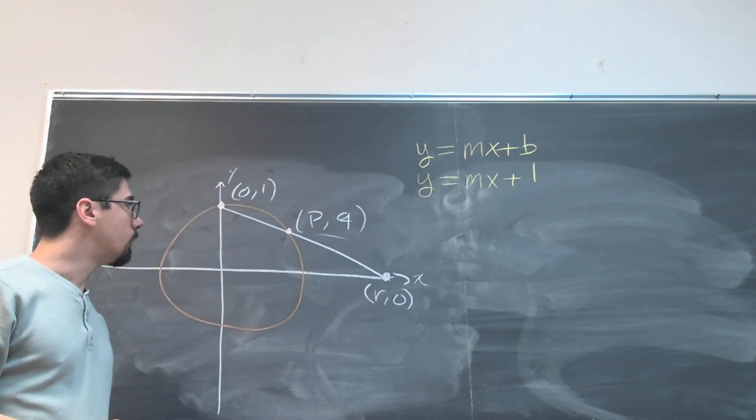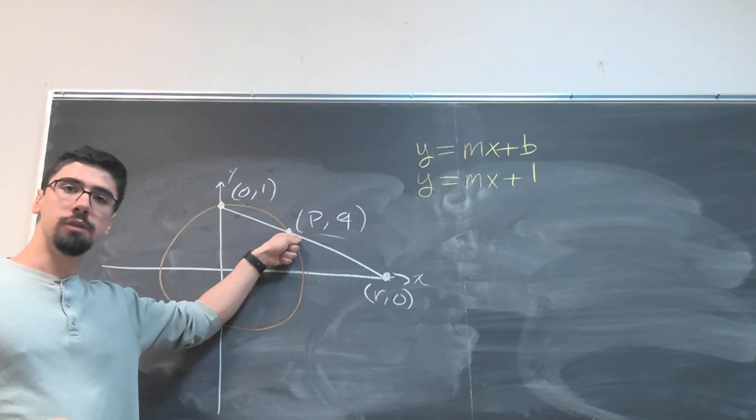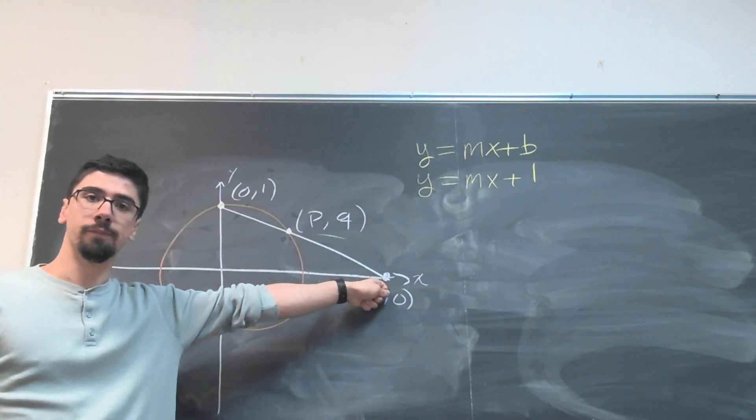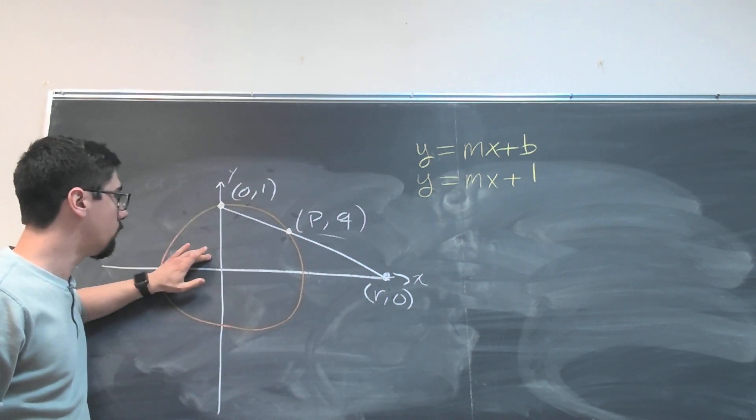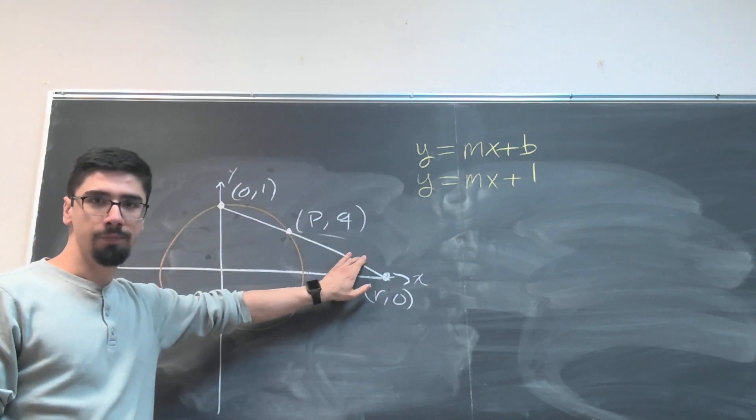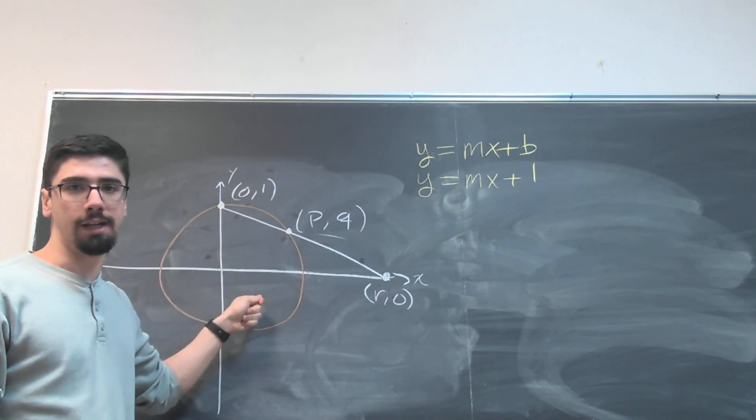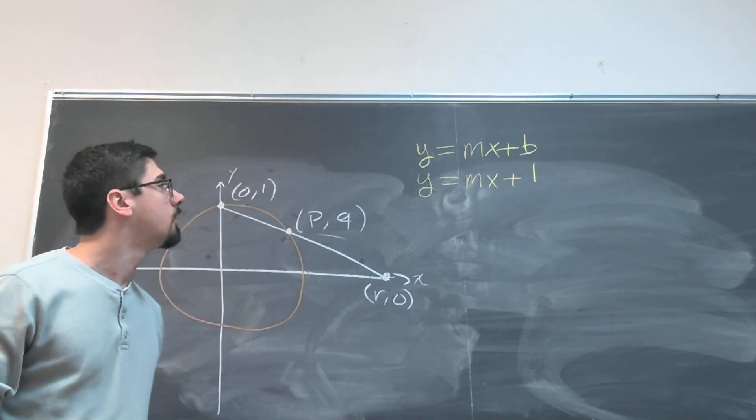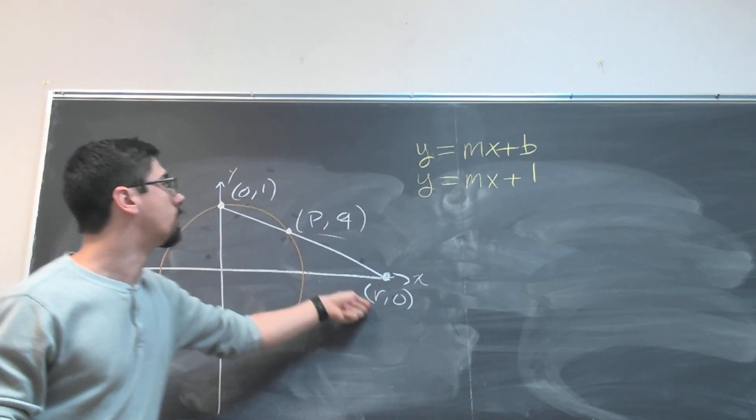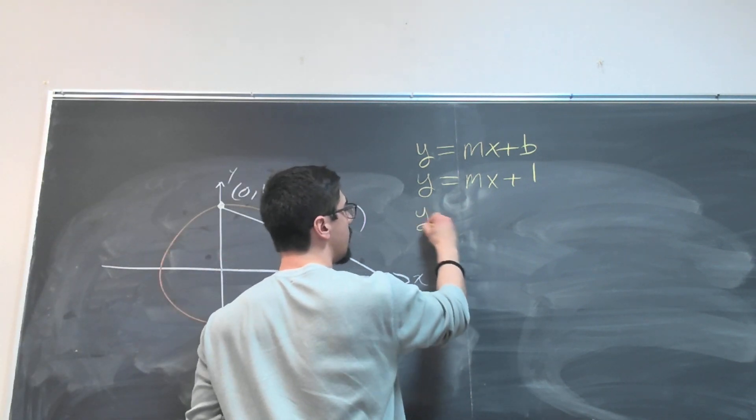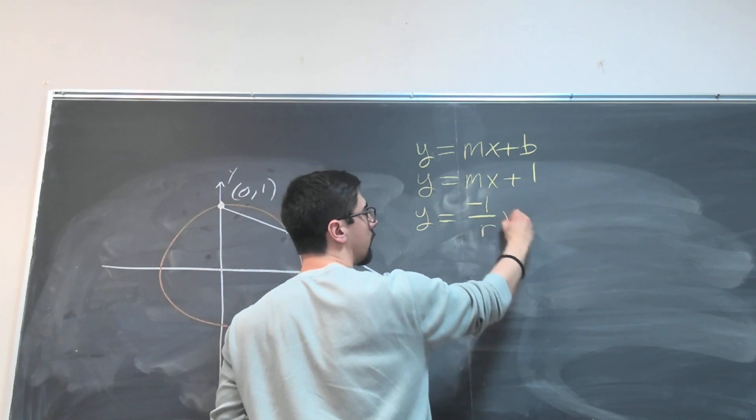And as for the slope, well we don't know where it hits over here, but we do know that we hit over here on the line. And so we have to go down 1 and over r. And slope is just the change in y divided by the change in x. So since we go down 1 over r, the slope m must be negative 1 over r.